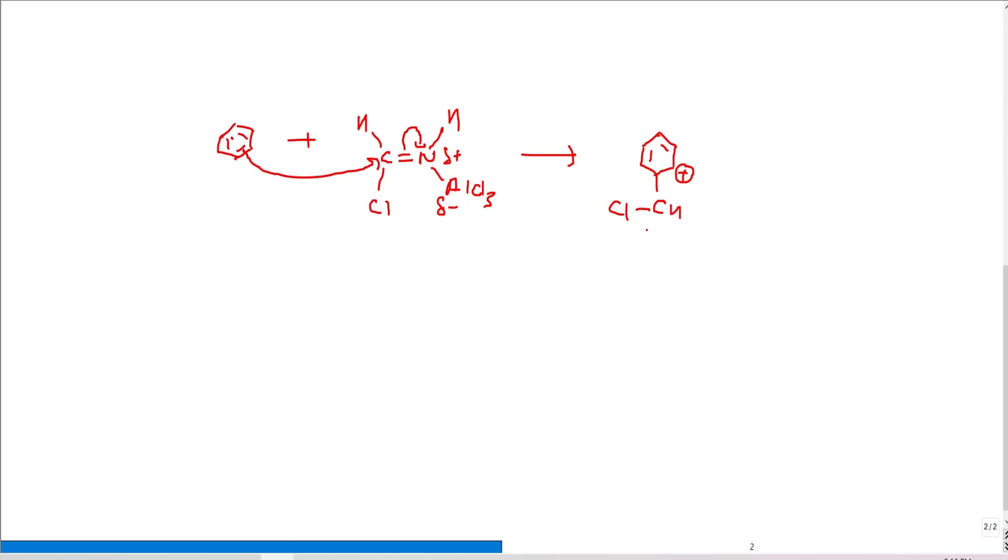The aromaticity of benzene ring is lost during this step. So, it has to be regained. But one other important thing is you have a good leaving group as AlCl4. As you can see, there is a negative charge on aluminum, which is not stable. So, it has to be neutralized. Cl is a good leaving group.